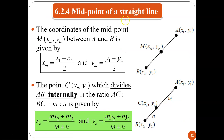Next: midpoint of a straight line. The coordinates of the midpoint M between points A and B are: XM = (X1 + X2) / 2 and YM = (Y1 + Y2) / 2. You simply add the X-coordinates and divide by 2, and add the Y-coordinates and divide by 2, because it is the middle point.